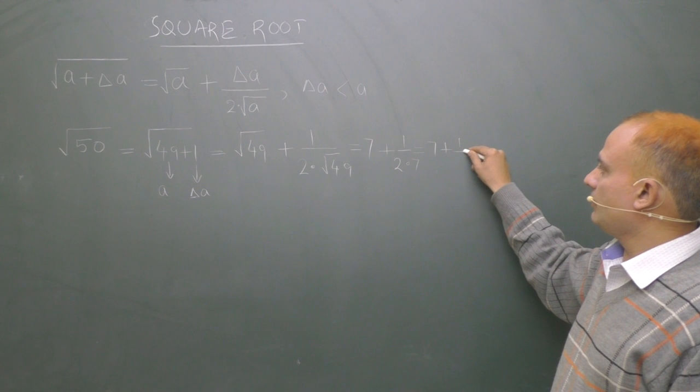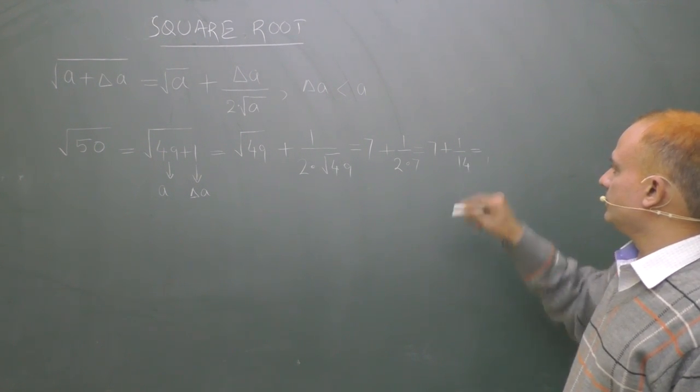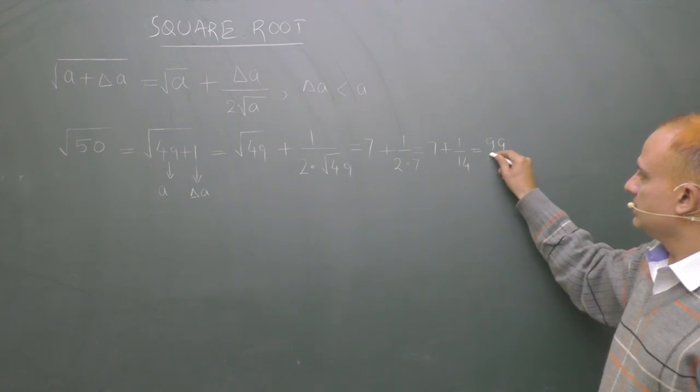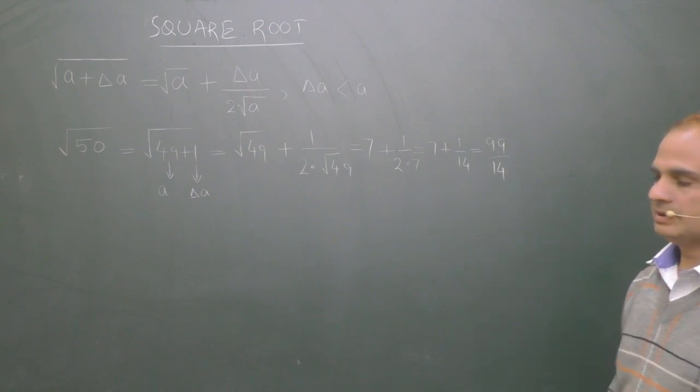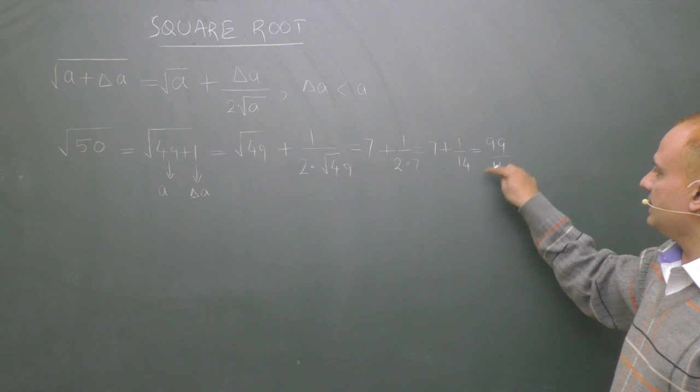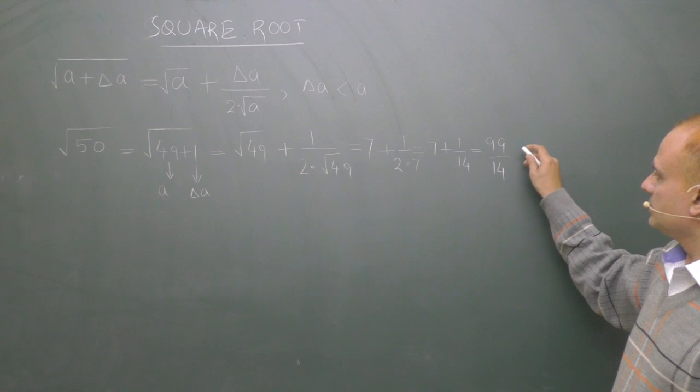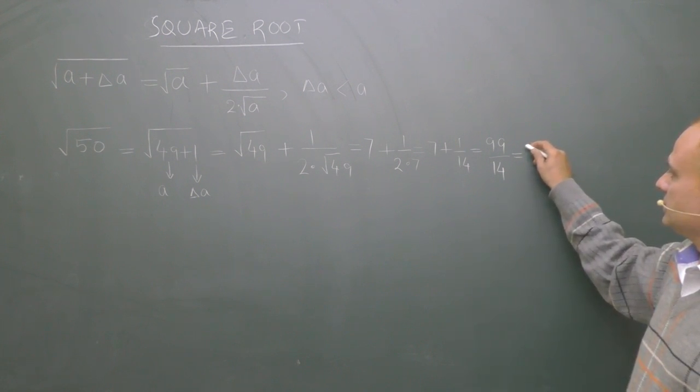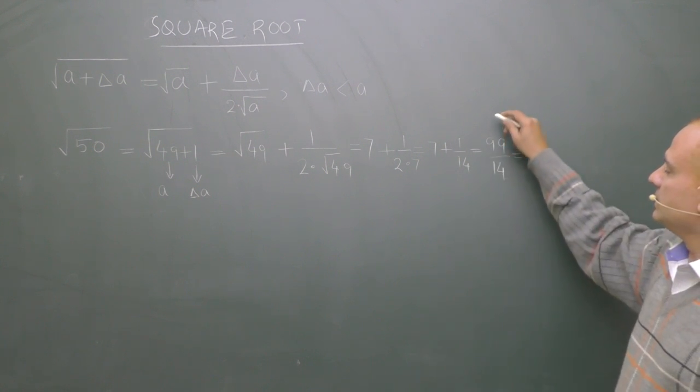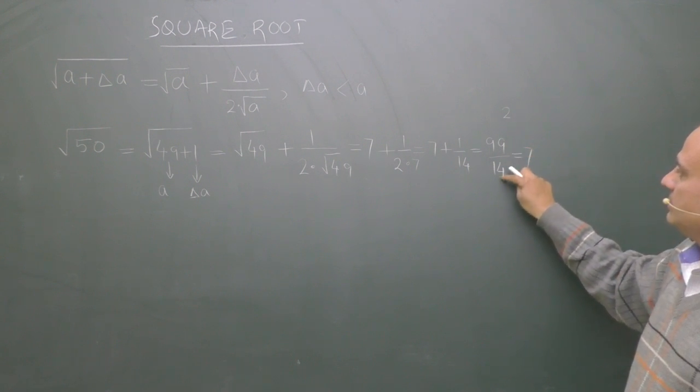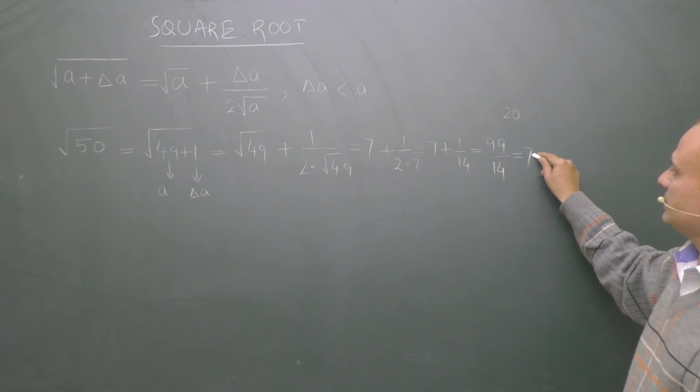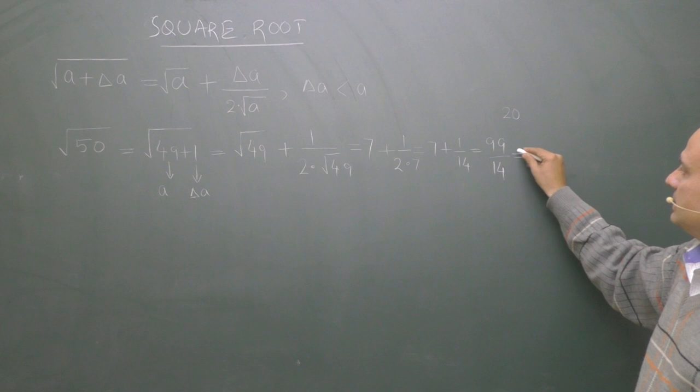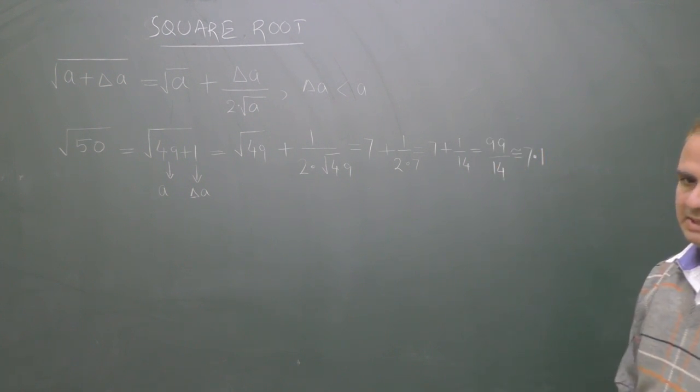It is 7 plus 1 upon 2 into square root of 49 is 7. 7 plus 1 upon 14, 98 plus 1, 99 upon 14. Now divide this 99 by 14. You will find square root of 50. 14 into 7 is 98, remainder is 2. 2 is not divisible by 14. Apply a 0 and put a decimal sign here. Now divide 20 by 14. You will find approximately 7.1. This result is an approximate result. It is not an exact result.